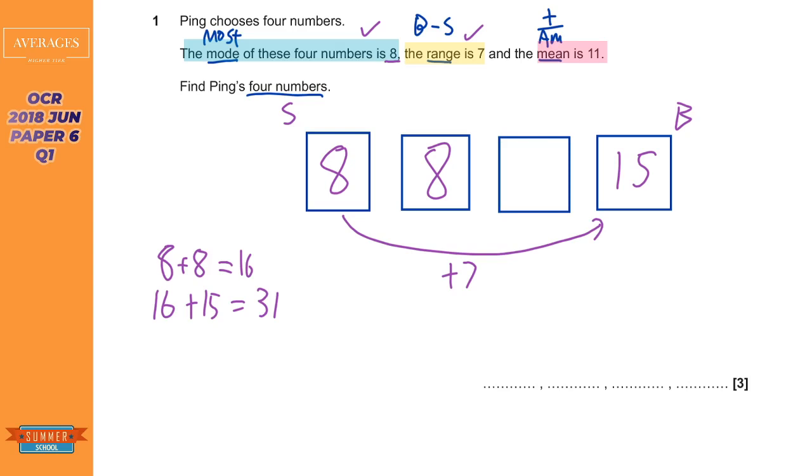So they add up to thirty one. Now the mean it says is eleven and so when we add up all these numbers these four numbers for the mean to be eleven it's got to add up to forty four. Because what we do is we add them all up and divide them by the amount of numbers and there's four numbers. So we're going to do forty four divided by four to get eleven. So it's going to have to add up to forty four so what I'm going to do is just do forty four and then take away the thirty one which is going to be thirteen.